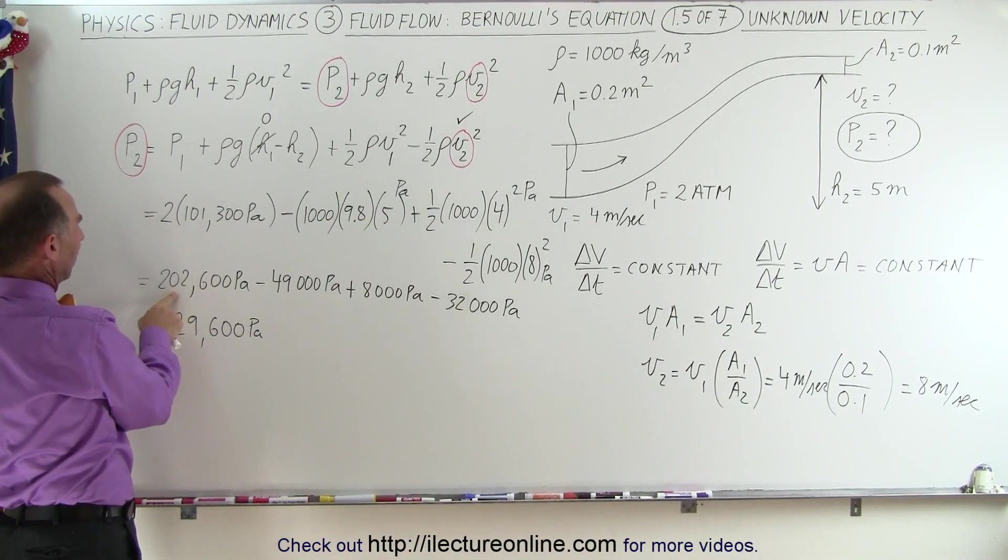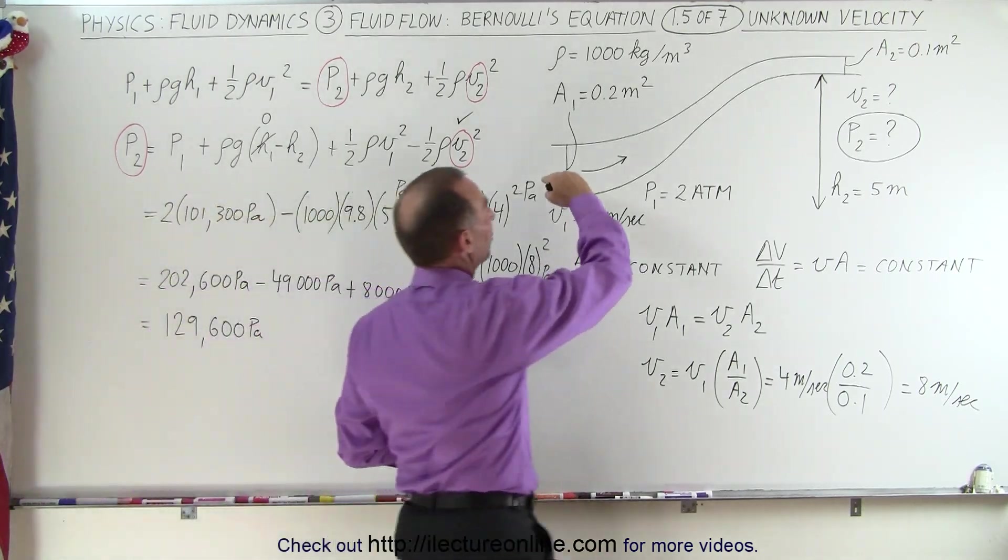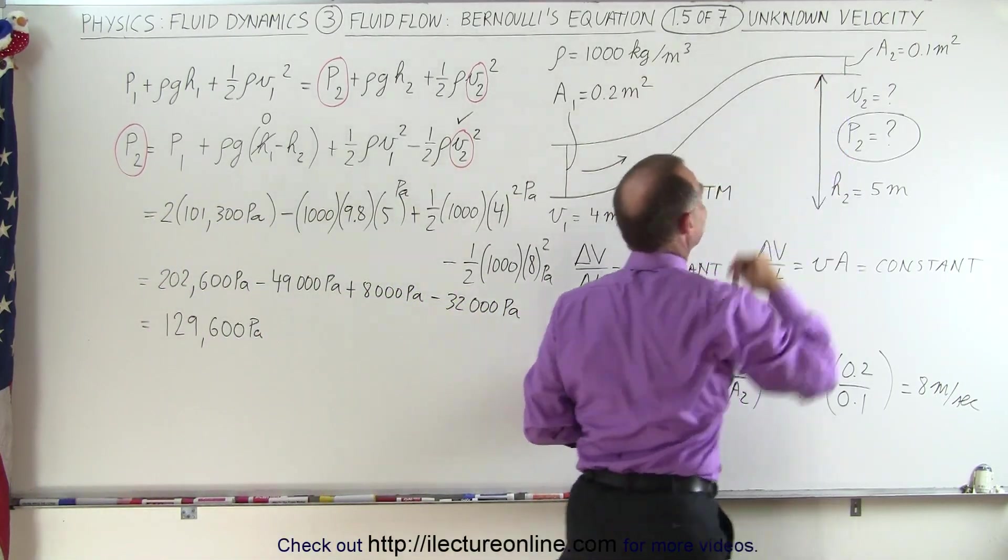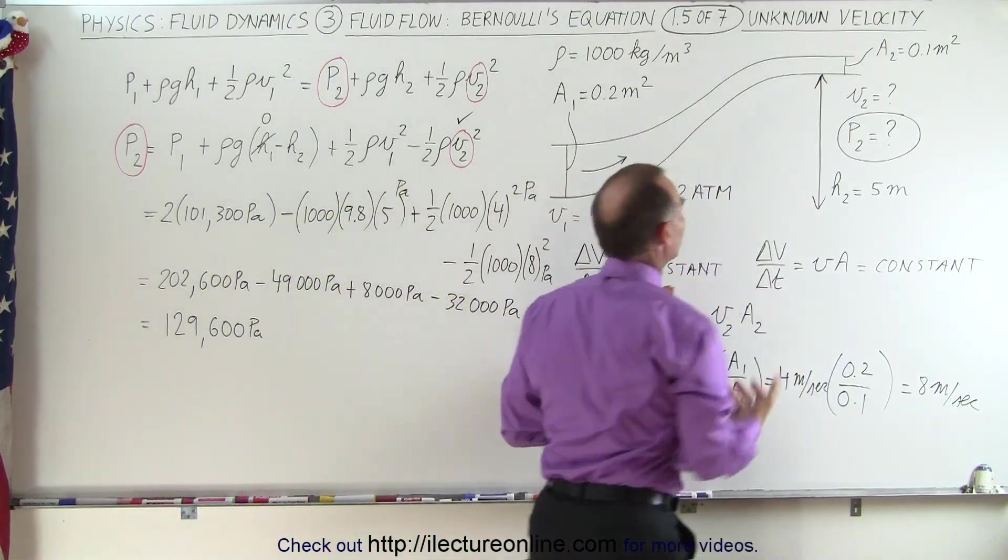Which is the pressure at 0.2. Why is it lower than at 0.1? Because at 0.1 it would be twice that, so this is the pressure at 0.1, 202,600, this is the pressure at 0.2.